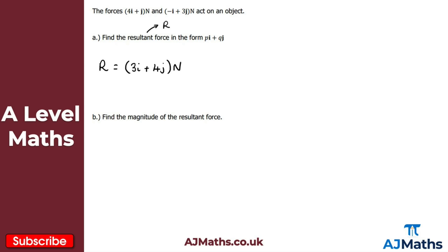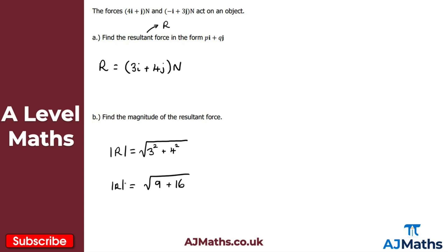For part B, we're asked to find the magnitude of the resultant force. We apply Pythagoras: the magnitude of R is the square root of 3 squared plus 4 squared. That gives the square root of 9 plus 16, which is the square root of 25, equal to 5. The magnitude of the resultant force is 5 newtons.